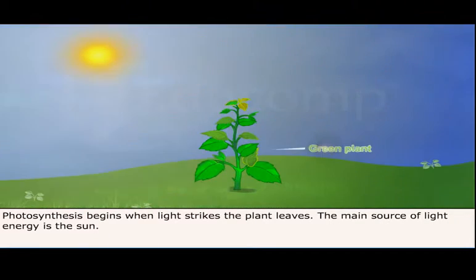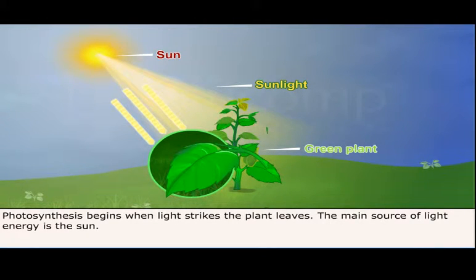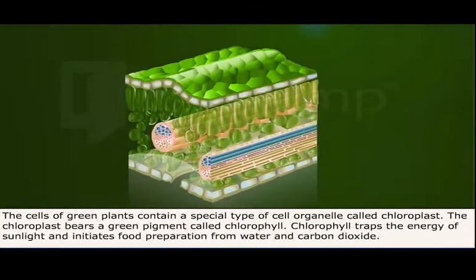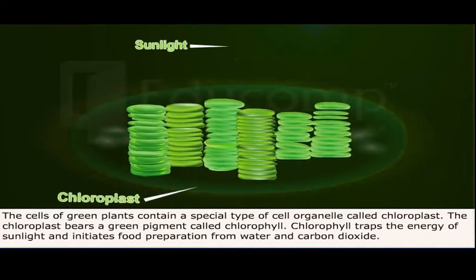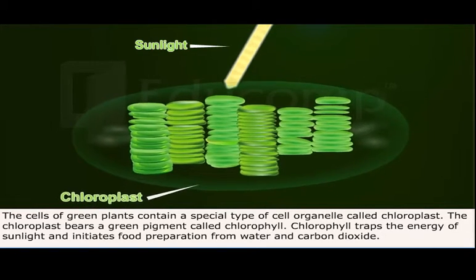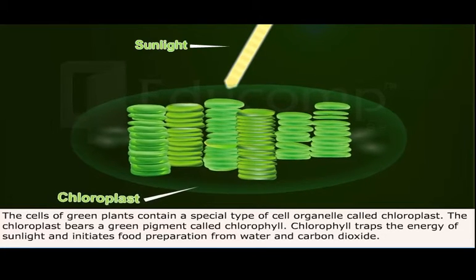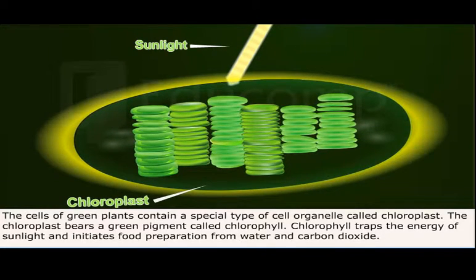Photosynthesis begins when light strikes the plant leaves. The main source of light energy is the sun. The cells of green plants contain a special type of cell organelle called chloroplast. The chloroplast bears a green pigment called chlorophyll. Chlorophyll traps the energy of sunlight and initiates food preparation from water and carbon dioxide.